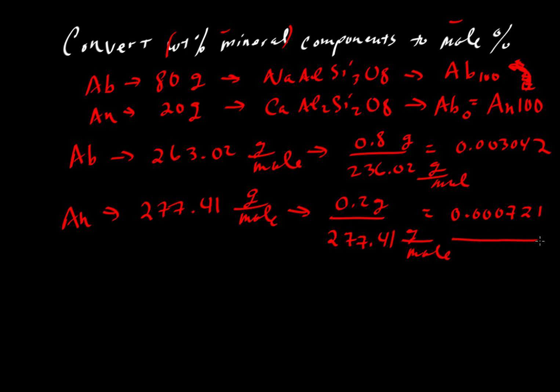So we'll take the sum of those two numbers. So let's add these two fellows together. And that sum will be the total number of moles. And those will add up to 0.003762. So that's the total number of moles in our system.